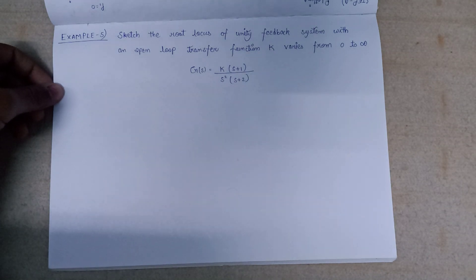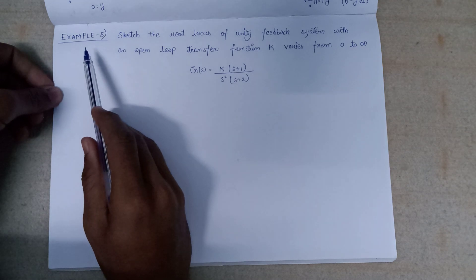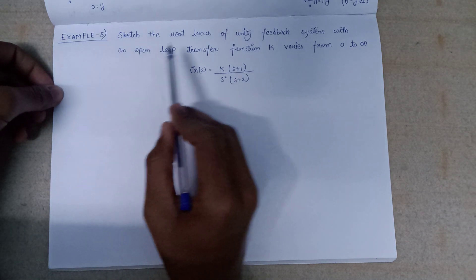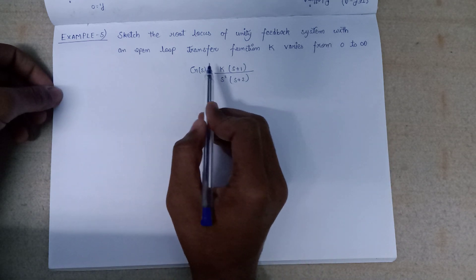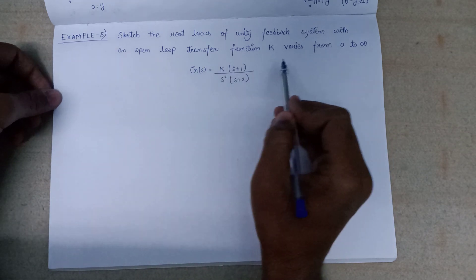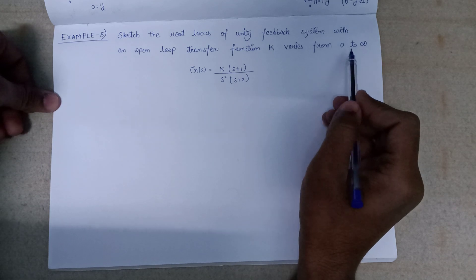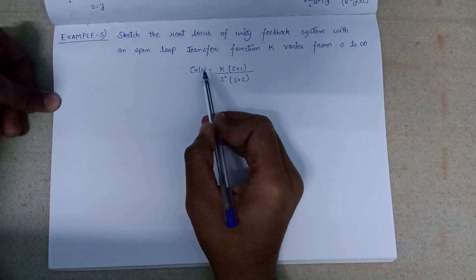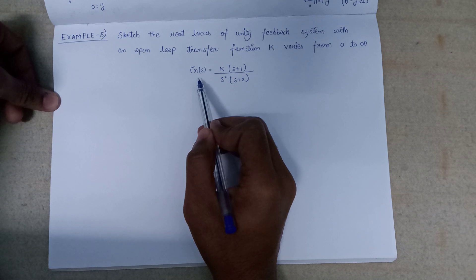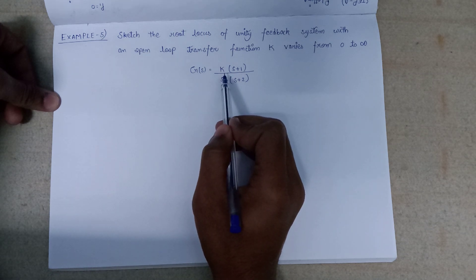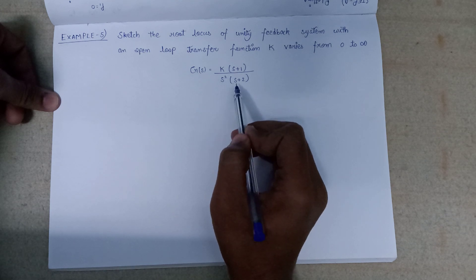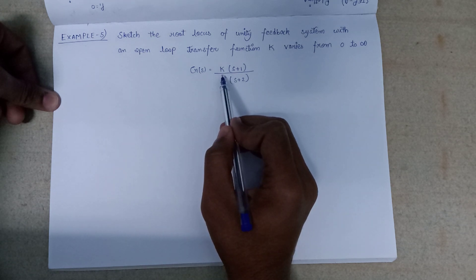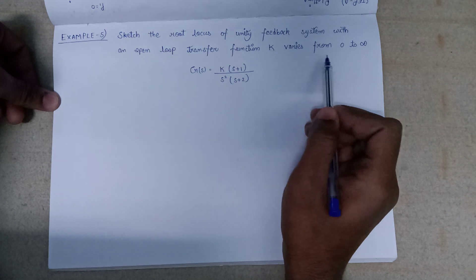Welcome all. In this lecture we are going to deal with one more example, that is example number 5. Sketch the root locus of a unity feedback control system with an open loop transfer function, where k varies from 0 to infinite. The open loop transfer function is G(s) = k(s+1) / (s² + s + 2), with k varying from 0 to infinite.